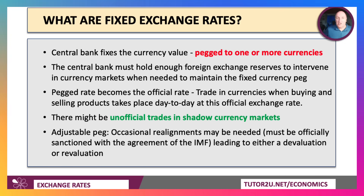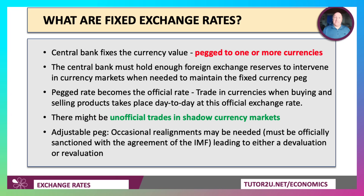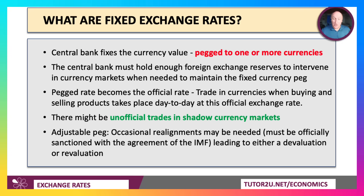When you have a fixed exchange rate, there can be realignment — an adjustable peg. The government might decide to devalue the exchange rate (reduce it) or revalue (increase it) with the agreement of the IMF. Quick note: with floating exchange rates you talk about depreciation and appreciation; with a fixed exchange rate you talk about devaluation and revaluation. Use those words carefully.